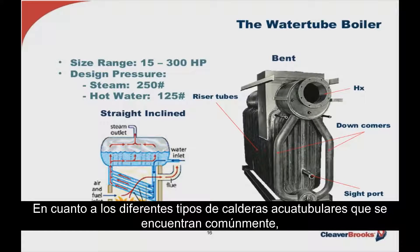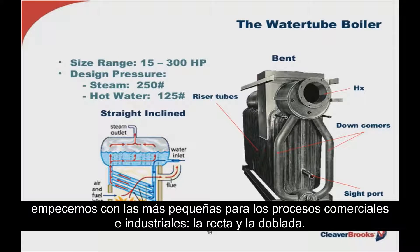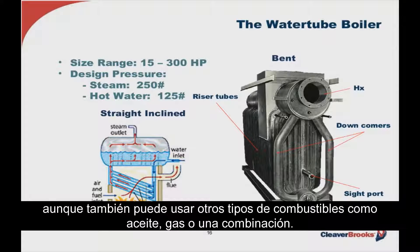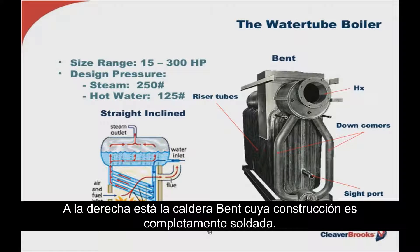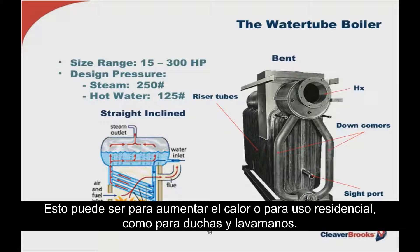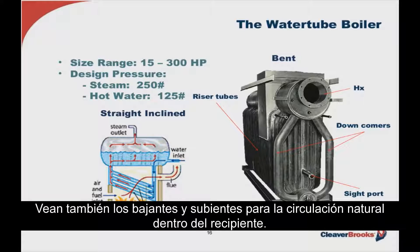Drilling down into the various types of water tubes, we start with smaller water tubes used in smaller commercial heating and industrial process applications: the straight inclined and the bent steel water tubes. The straight incline type uses an atmospheric gas burner, but these can also be equipped with power burners burning oil, gas, or a combination. The bent water tube pressure vessel has all welded steel construction. It's also being used to heat hot water through a heat exchanger placed in the upper drum connection, possibly for building heat or domestic use such as sinks or showers.